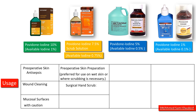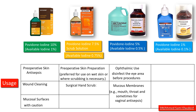Povidone iodine 5% is often used in ophthalmology to disinfect the eye area before procedures like cataract surgery. It's less irritating to the eyes than higher concentrations. It can also be used on mucosal surfaces like the mouth and throat, and sometimes for vaginal antisepsis before gynecological procedures.